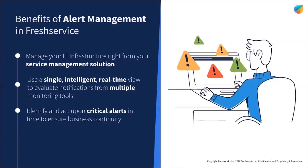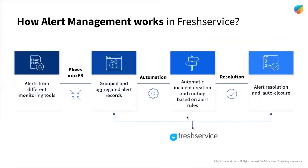FreshService serves as a single pane of glass to triage information from multiple tools and it is easy to set up your integrations via a webhook. Through alert grouping, agents can cut through the noise and get to the bottom of the issue quickly. There's also automatic incident creation based on incoming alert properties, helping route to the respective agent groups for quick resolution without manual intervention, and automatic CI association to incidents for root cause analysis.